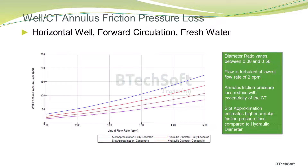Here's an example that shows the variation of the coil tubing annulus friction pressure loss in a horizontal well where fresh water is circulated. The diameter ratios in this horizontal well vary between 0.38 and 0.56. This graph shows the annulus friction pressure loss for a range of flow rates between 2 and 5 BPM, with the flow being turbulent even at the lowest flow rate of 2 BPM. The results are shown for both the hydraulic diameter and the slot flow approximation in a concentric and fully eccentric annulus. As expected, the annulus friction pressure loss increases with flow rate. In general, the annulus friction pressure loss reduces with eccentricity of the coil tubing, which is consistent with experimental investigations reported in the literature.